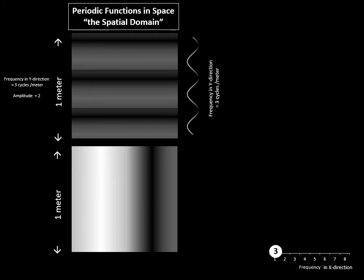If we now have a second square where the variation in signal intensity is in the vertical or y direction, and we change the frequency to three cycles of variation over one meter of distance in that vertical or y direction.